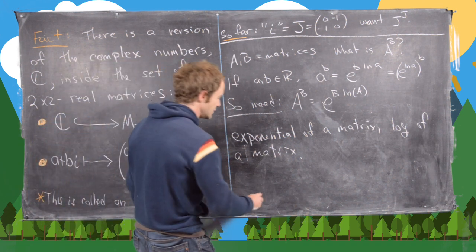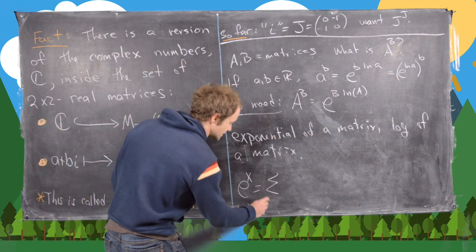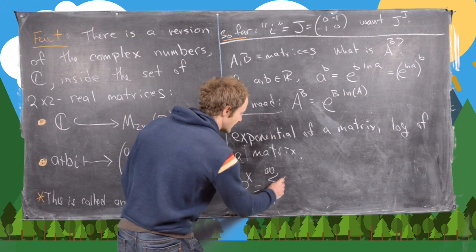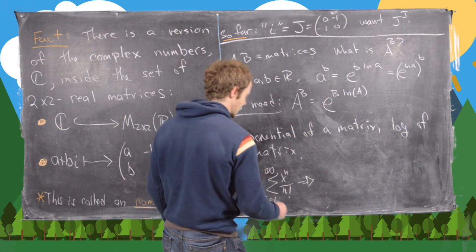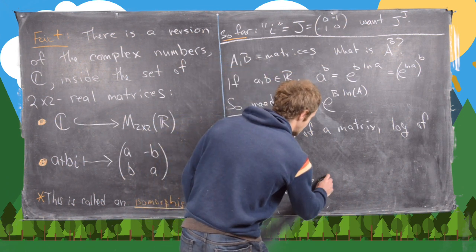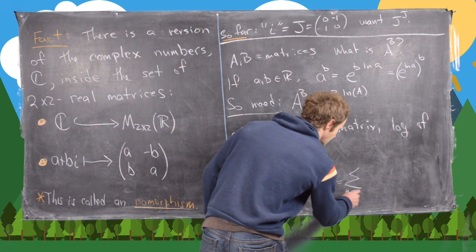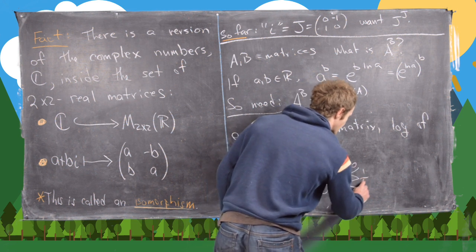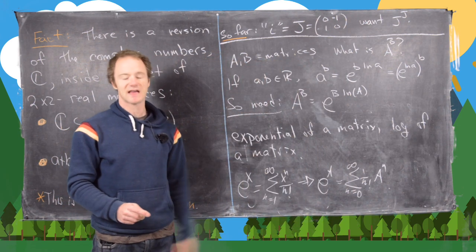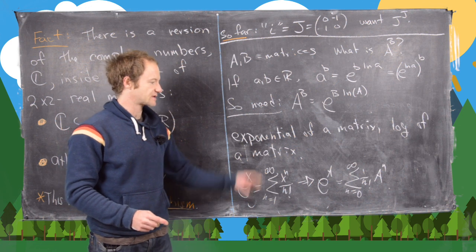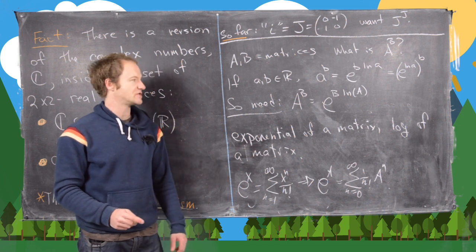Using the Taylor series of e^x — which equals the sum from n=0 to infinity of x^n / n! — that is exactly how we define the exponential of a matrix. So e^A equals the sum from n=0 to infinity of (1/n!) · A^n. That's how we define the matrix exponential.